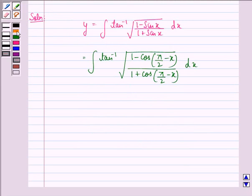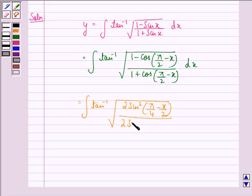This can be further written as integral tan inverse square root, now the numerator can be written as 2 sin square pi by 4 minus x by 2 divided by the denominator, so that can be written as 2 cos square pi by 4 minus x by 2 into dx.